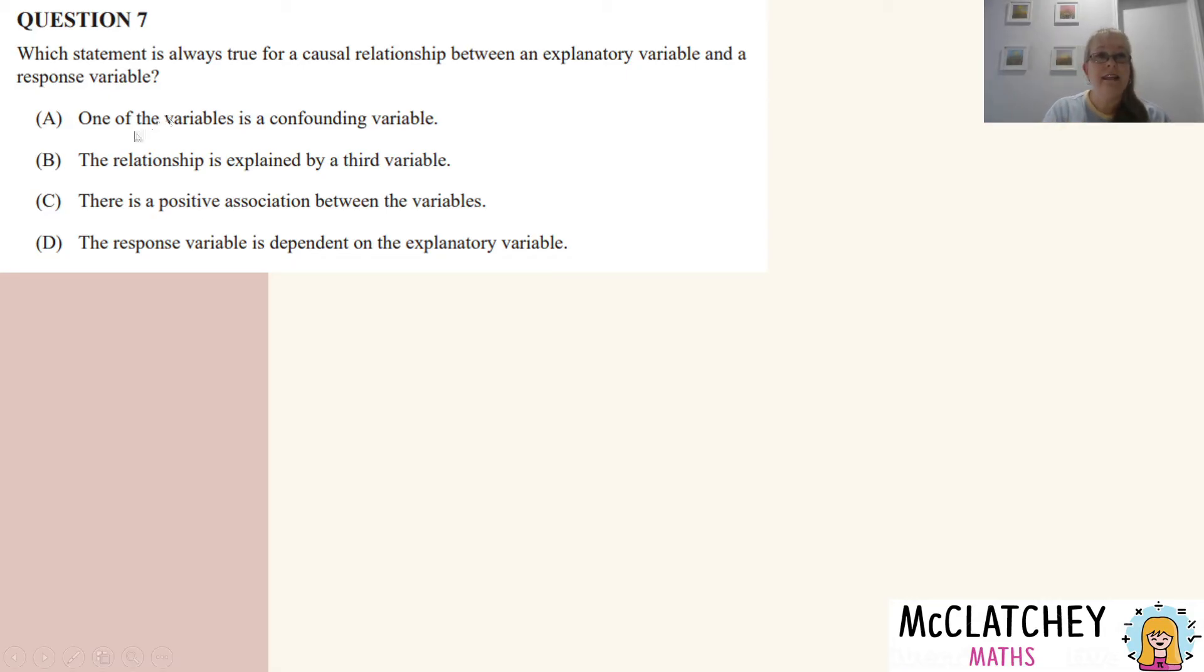Now down here, it's saying one of the variables is a confounding variable. Now a confounding variable is typically one of those other variables that we aren't looking at in the situation. So it's a variable that causes the correlation to be weaker. Now in this particular case, we're told that one is causing the other. It's a causal relationship. So they can't be confounding variables. Let's eliminate that particular option there. The next one says the relationship is explained by a third variable, but that's the same thing as a confounding variable. We've already been told that one's causing the other. So that one is out as well.